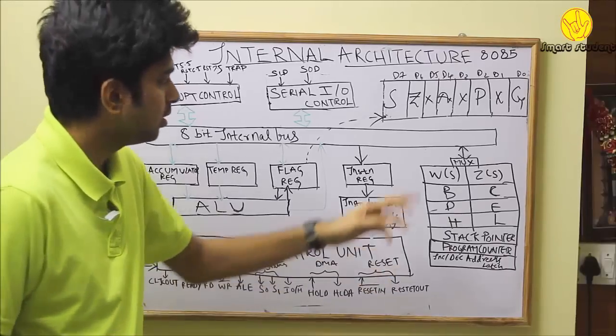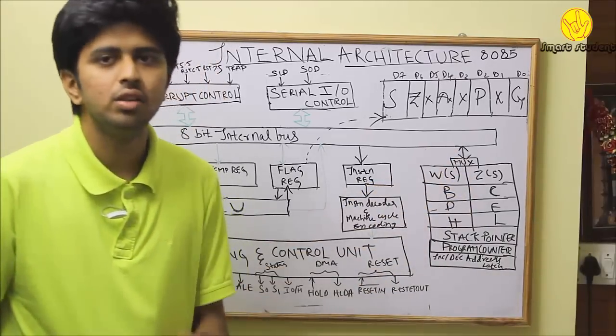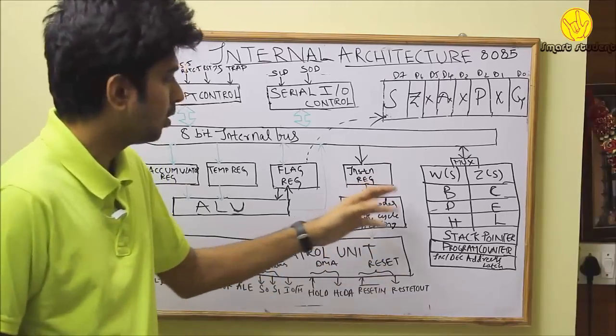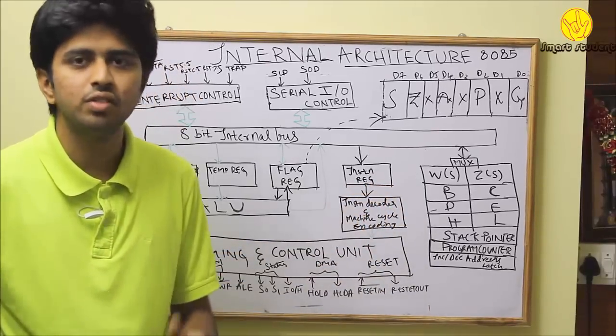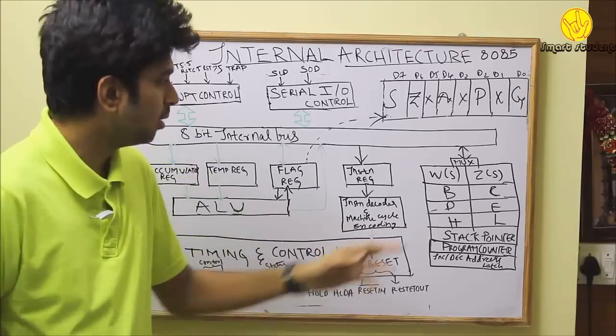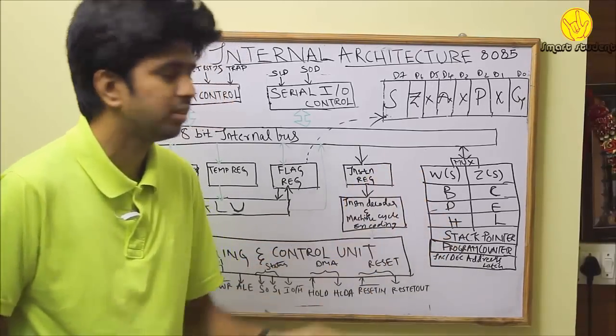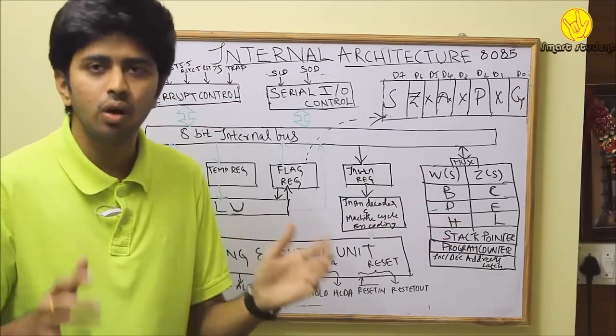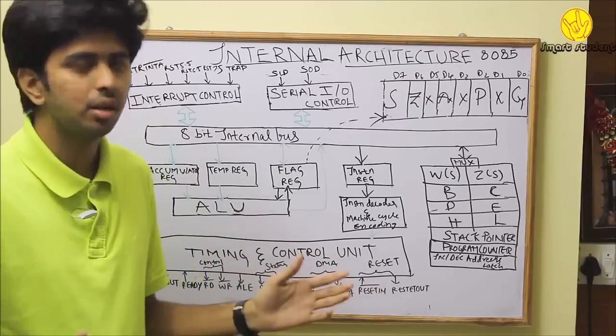Coming to the register section, it consists of W and Z which are user denied registers. The general purpose registers consist of 6 registers and 3 register pairs: B, C, D, E, H, L are the individual registers. When they are used together, they are called register pairs consisting of BC, DE, and HL.